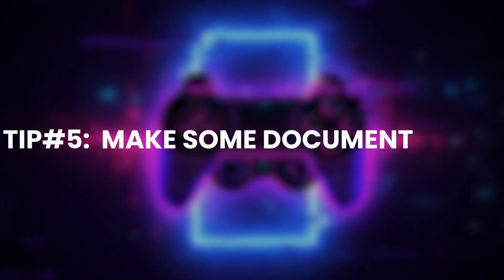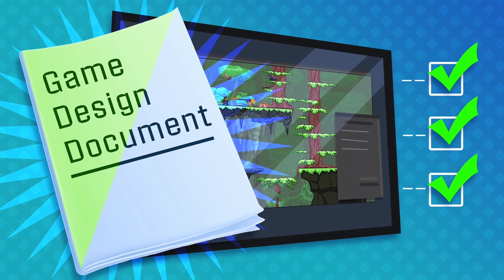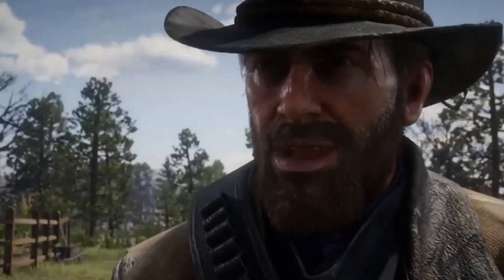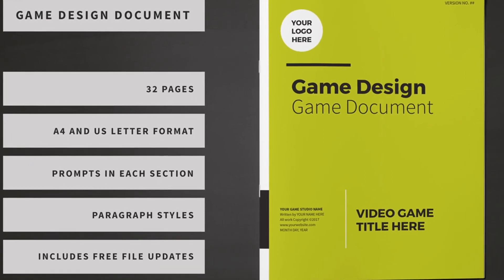Tip number five: make some documentation. I know a lot of people nowadays say that a game design document is not required, but they are just plain wrong. You're going to have a lot of ideas in the beginning, and you're going to be forgetting some of them as you make the game. You can make a simple GDD — a game design document — using tips I've explained in another video. Also, if you ever want to get a job at a game studio, this is a must-have skill. If you ever want to grow and make bigger, more complex games, you will definitely need to learn how to create and use documentation. Start small on a small project, and remember: a document is really, really important.